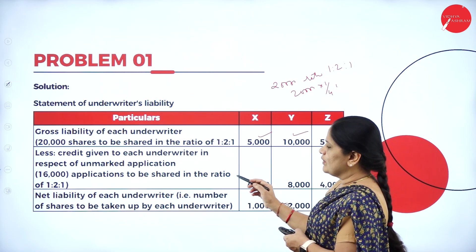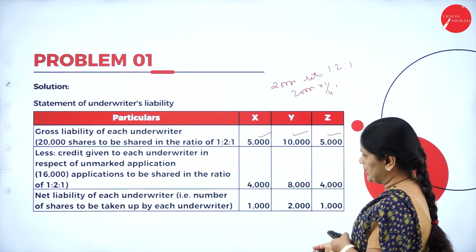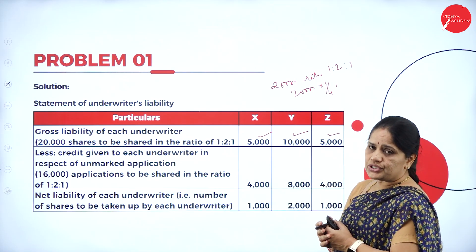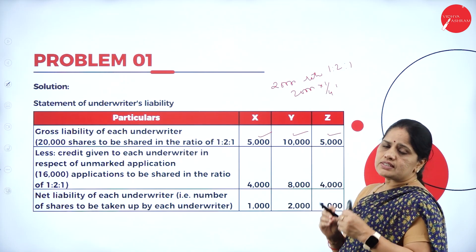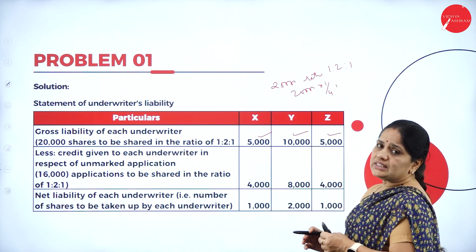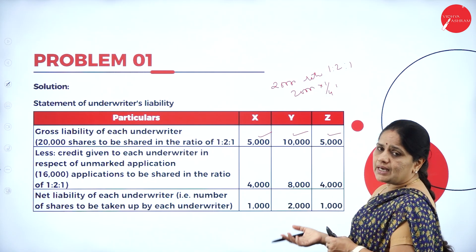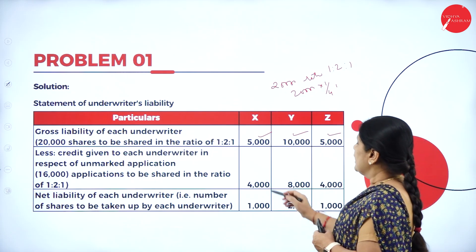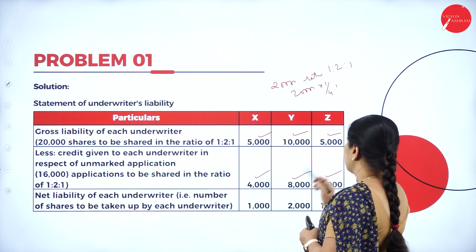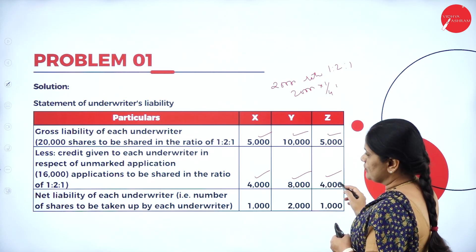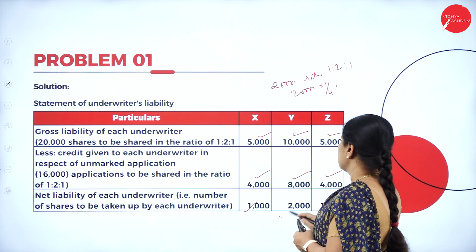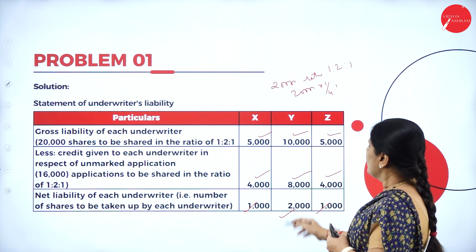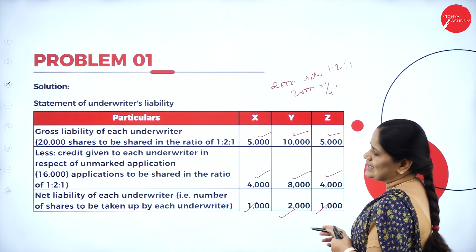Less credit given in respect of unmarked applications. The company has received 16,000 applications. They have not mentioned whether it is marked or unmarked, so we divide the applications received in the ratio of the underwriters: 4,000, 8,000 and 4,000. The balance remaining is the net liability of each underwriter: 1,000, 2,000 and 1,000.